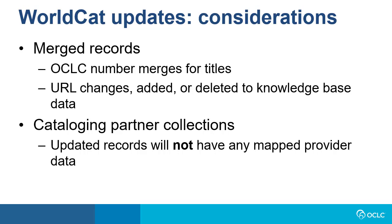For cataloging partner collections, if you enable WorldCat updates, you will want to preserve your provider data when you overlay updated records with those in your system, since WorldCat update records will not have any of your mapped cataloging partner collection provider data. Information about updated records will not be included in cataloging partner reports.